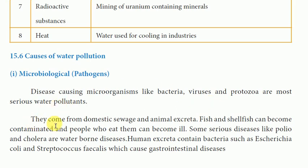They come from domestic sewage and animal excreta. Fish and shellfish can become contaminated, and people who eat them can become ill. Some serious diseases like polio and cholera are waterborne diseases. Human excreta contains bacteria such as E. coli and Streptococcus, which cause gastrointestinal diseases.